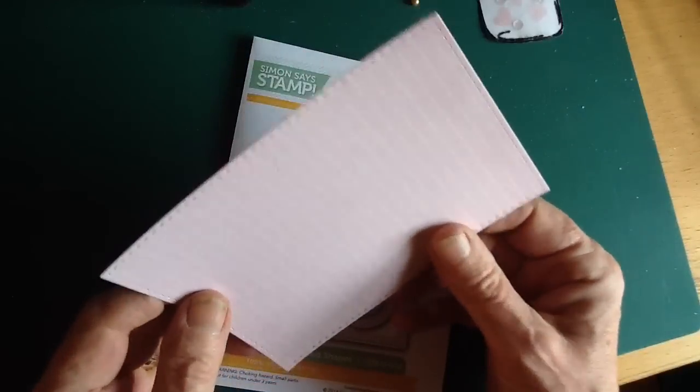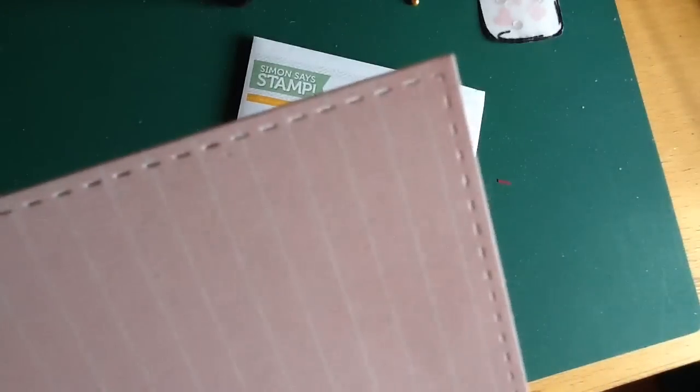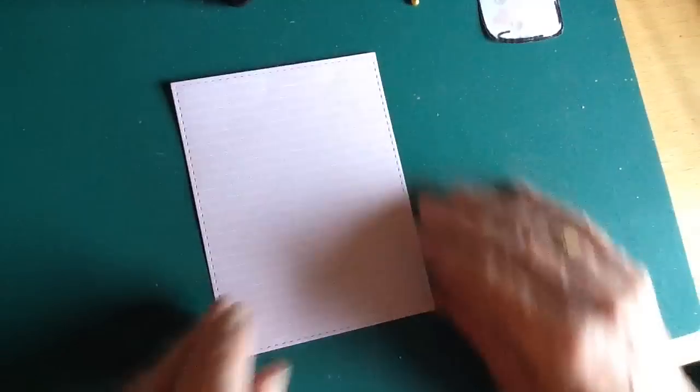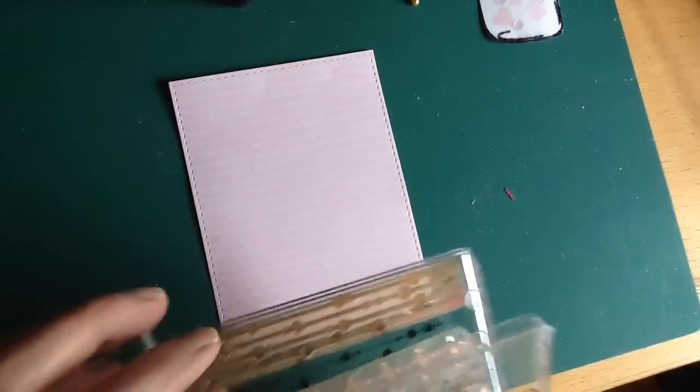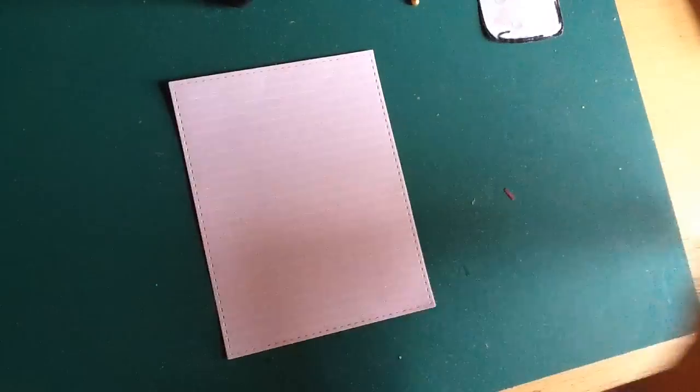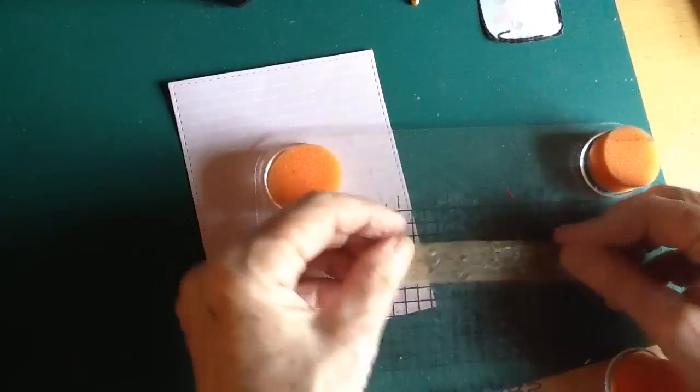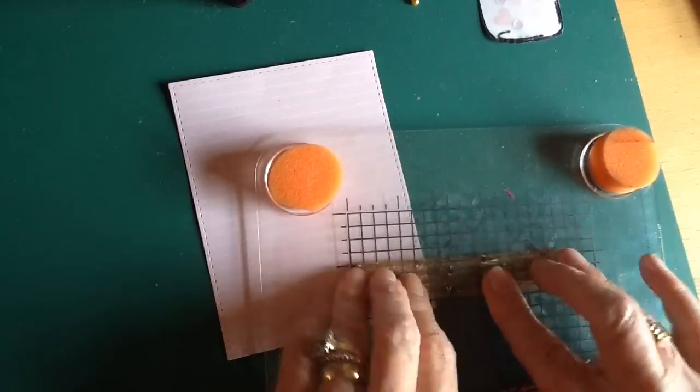So next I've cut a piece of, it's by Crate Paper, a piece of patterned paper with this lovely stitched edge die from Simon Says Stamp. But I thought that it looked, even though it's a very pretty color and I like it, I thought it looked a bit boring. So I'm taking this stamp which is from Paper Tray Ink, and it's from Modern Borders set.